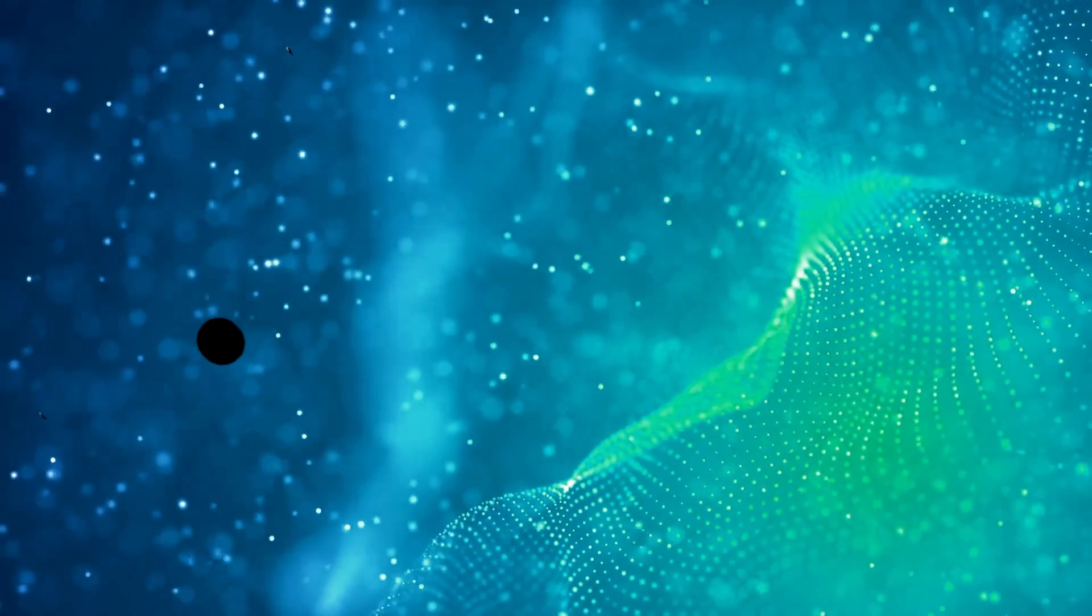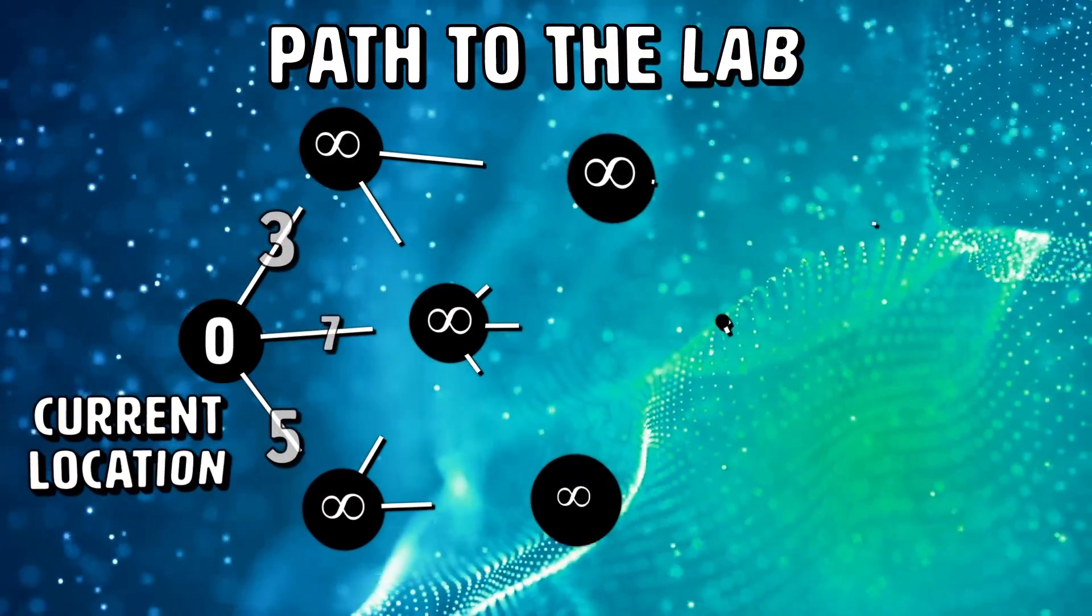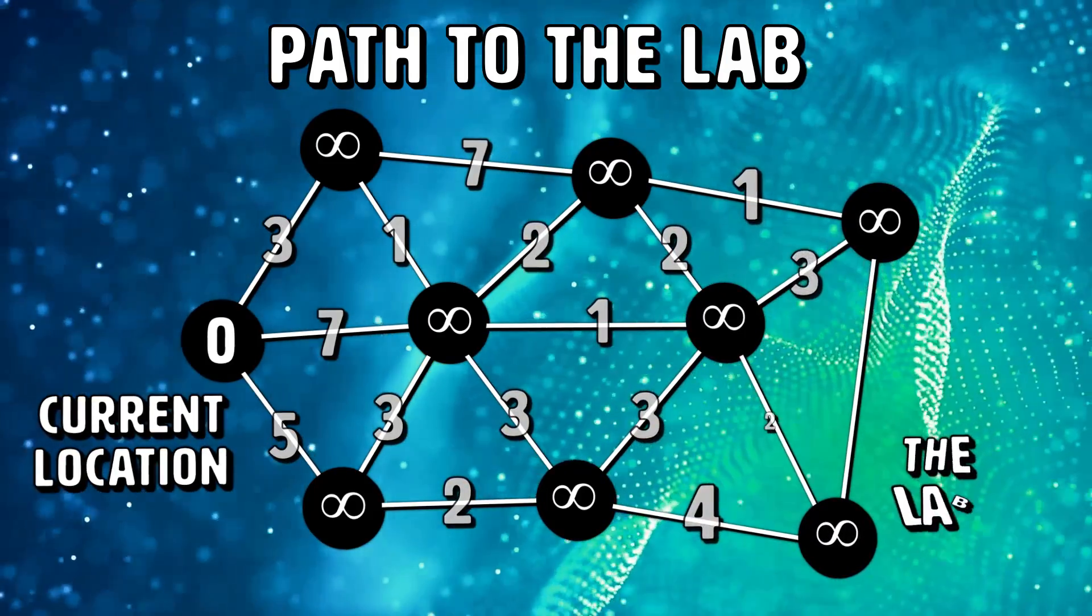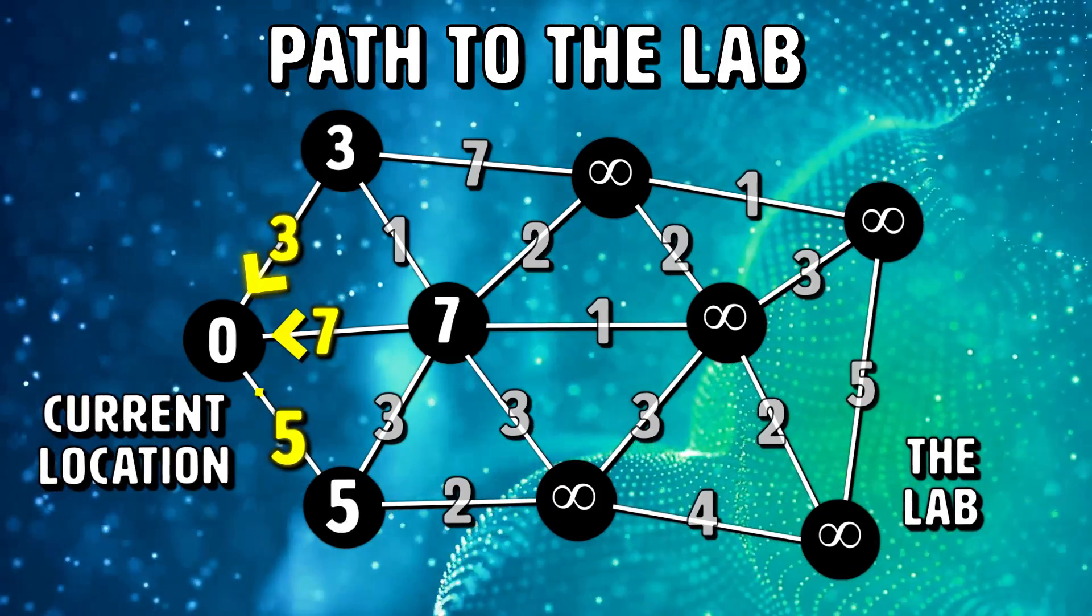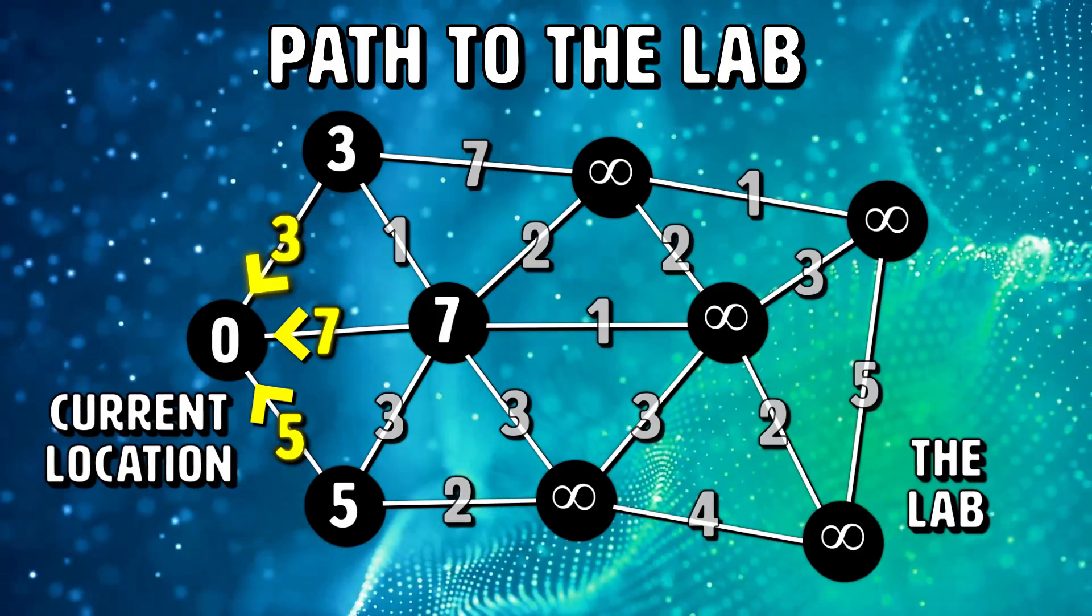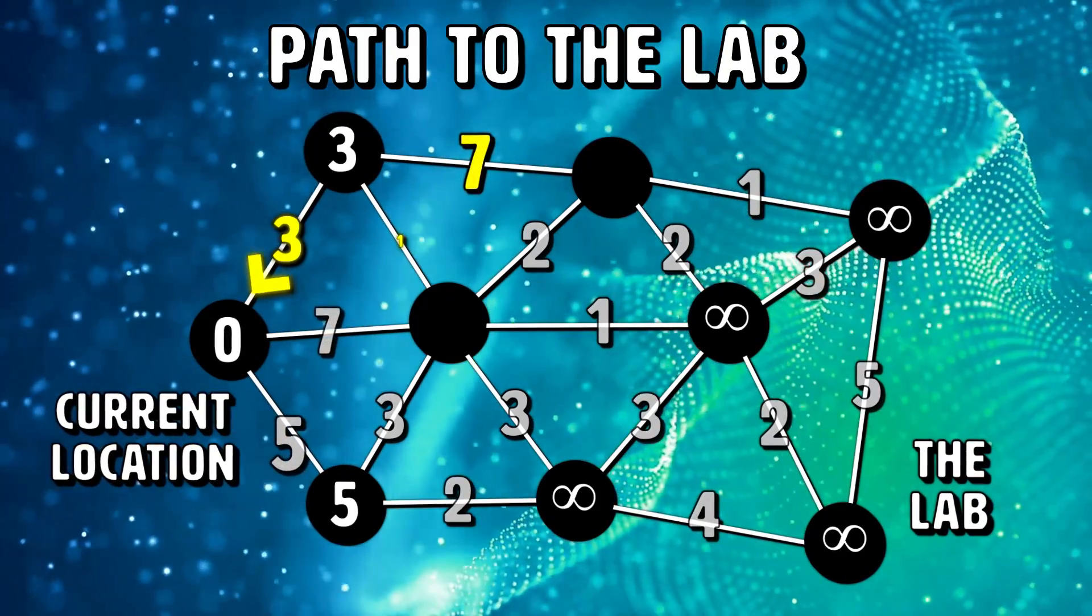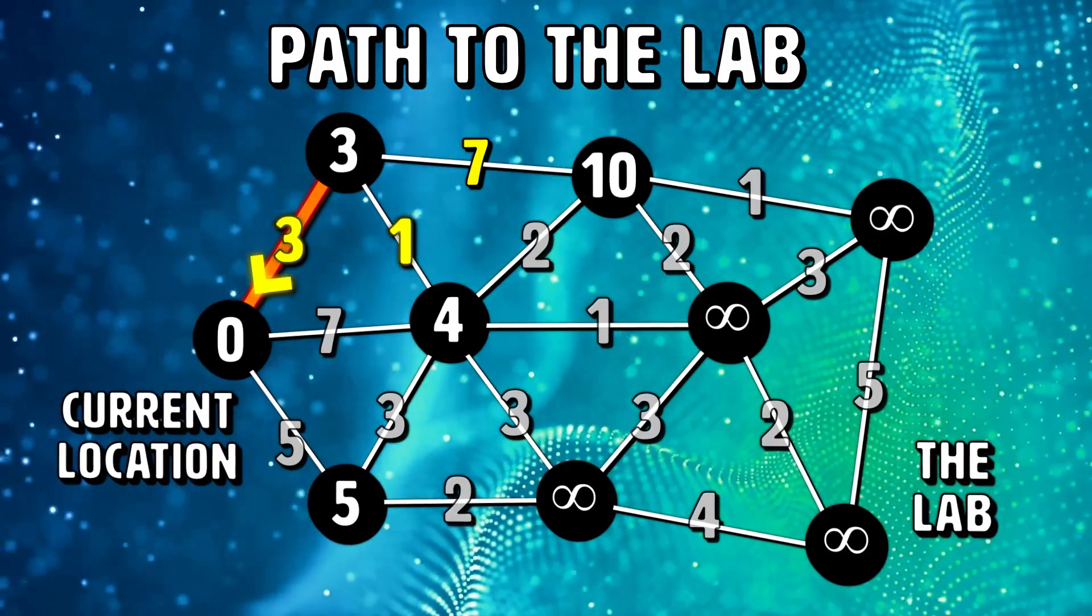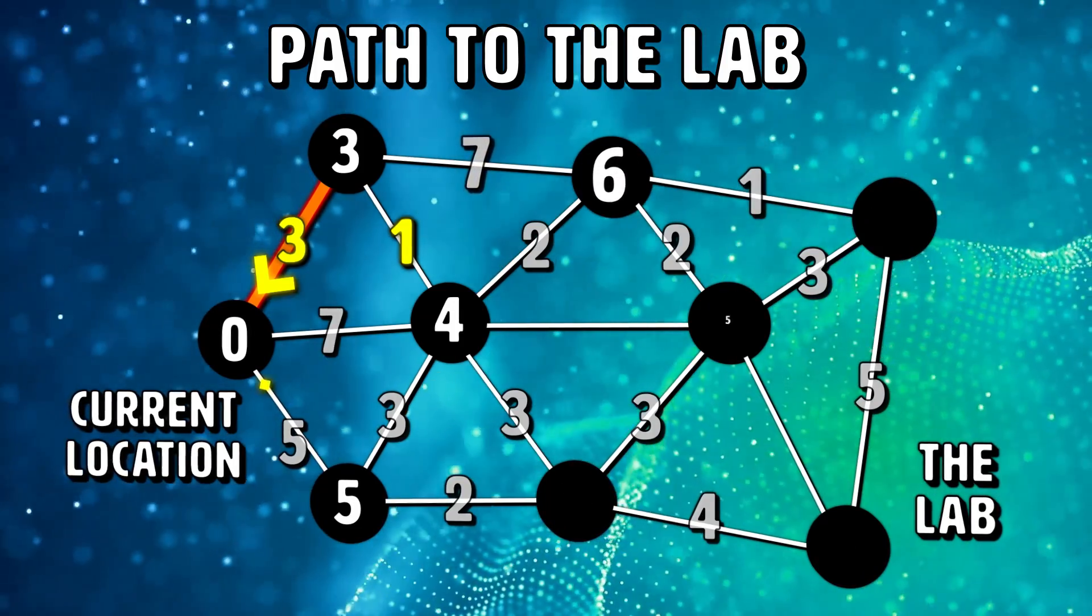Before we can start cracking the password to get the data on the USB drive, we've got to get to the lab and there are a lot of different paths we can take to drive there, but we're on a deadline so we want to get to the lab as fast as possible, meaning we want to take the shortest path. To compute this, we'll need to represent the collection of streets and intersections as a graph so that we can design an algorithm that will calculate the fastest way to get there. Since each street is two-way, this is an undirected graph, so there's no distinction between the two vertices associated with each edge.